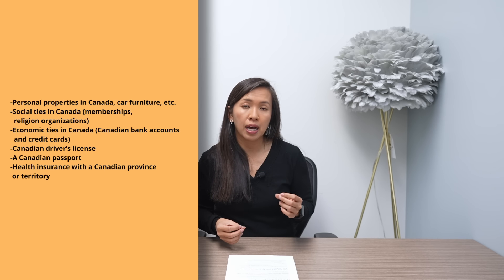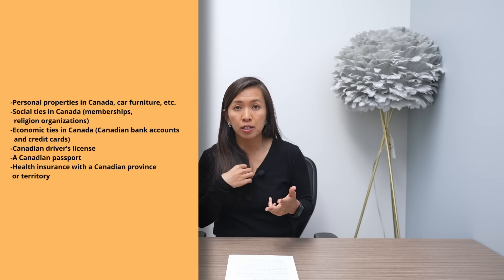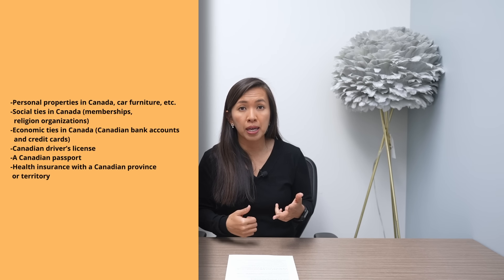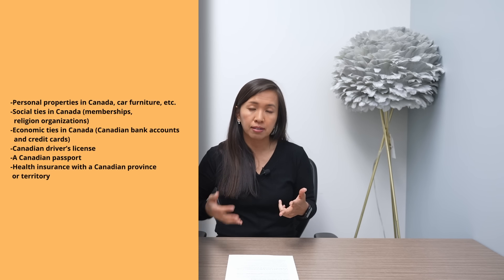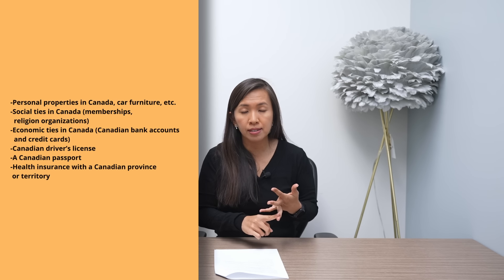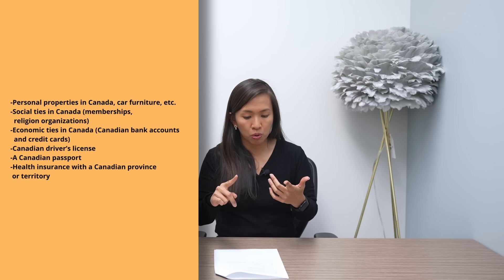On top of significant ties like dependents, permanent residence, and spouse, there are also secondary ties that CRA looks at. These include whether you own a car in Canada, have health insurance, are a member of a professional organization, hold a driver's license, have bank accounts or credit cards in Canada, or own personal property. All these factors help determine whether you have strong ties to Canada.